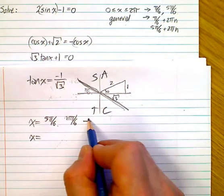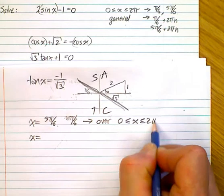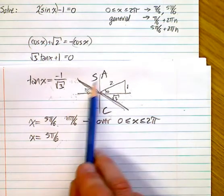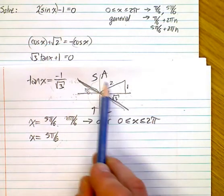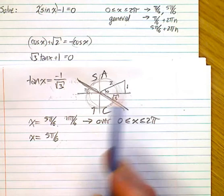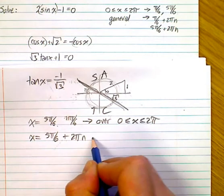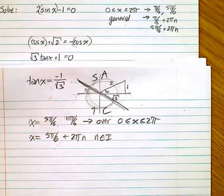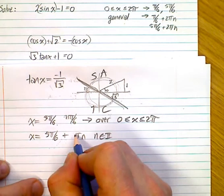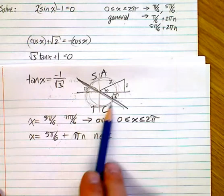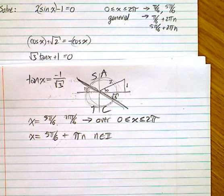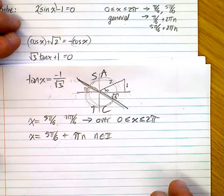That's the solution over the interval 0 to 2π. For the general solution, notice these two solutions are symmetrical and occur every π. So instead of writing both with +2πn, you can simplify: take 5π/6 + πn, since it repeats every π. You could also write 5π/6 + 2πn and 11π/6 + 2πn, but the simplified form is cleaner when there's symmetry.